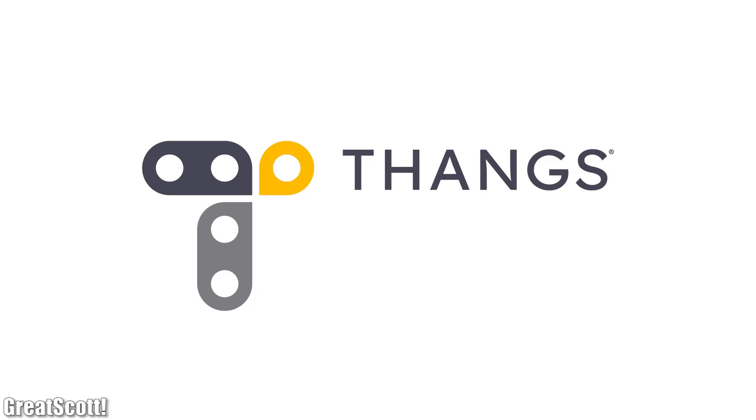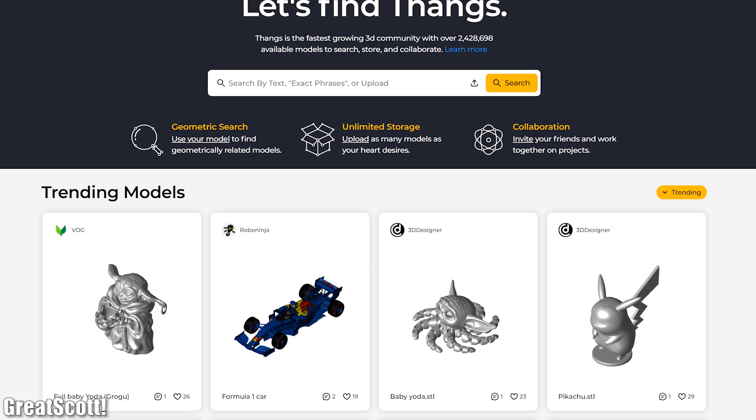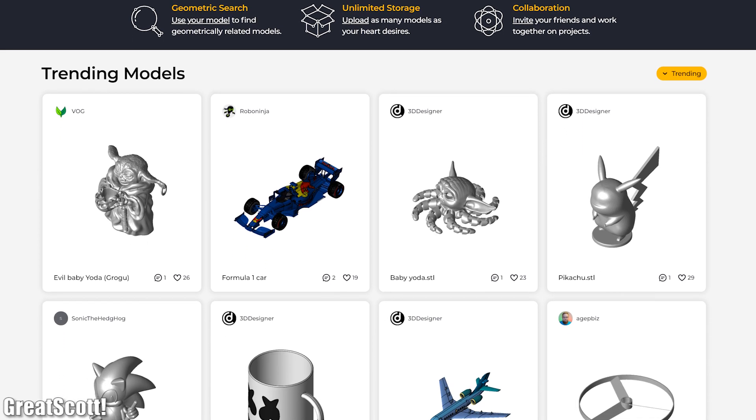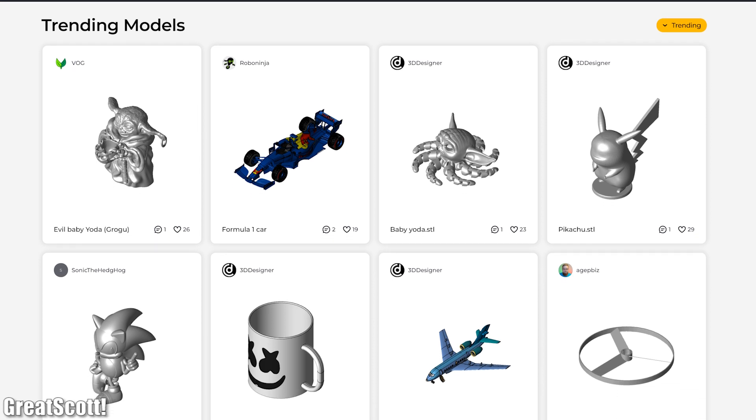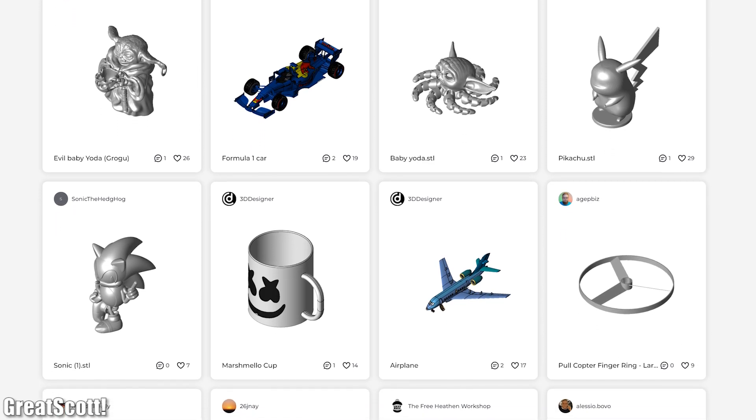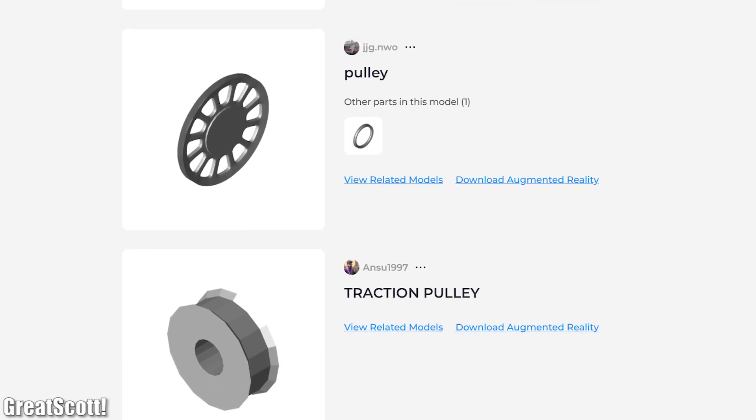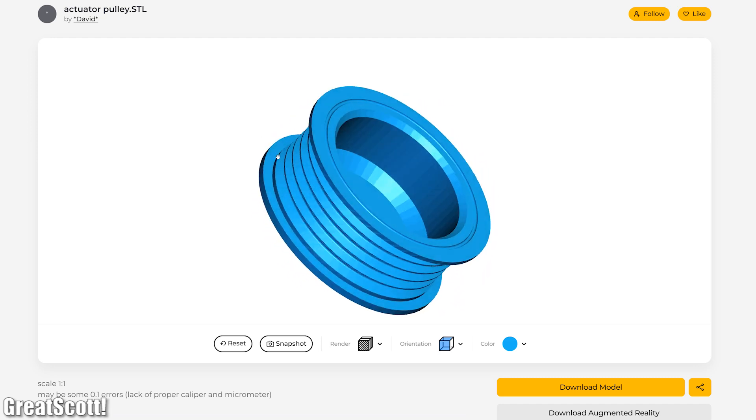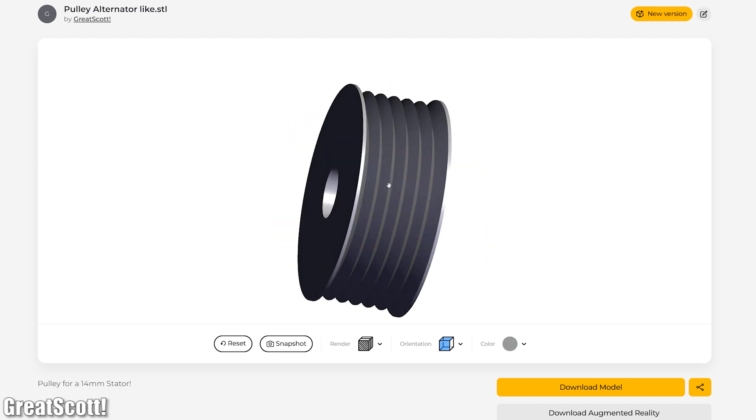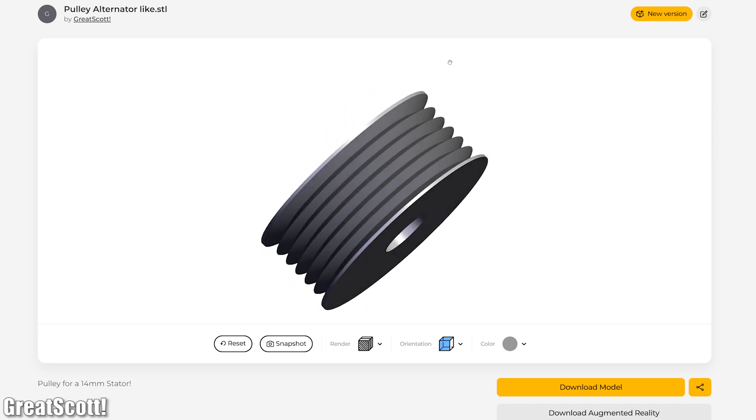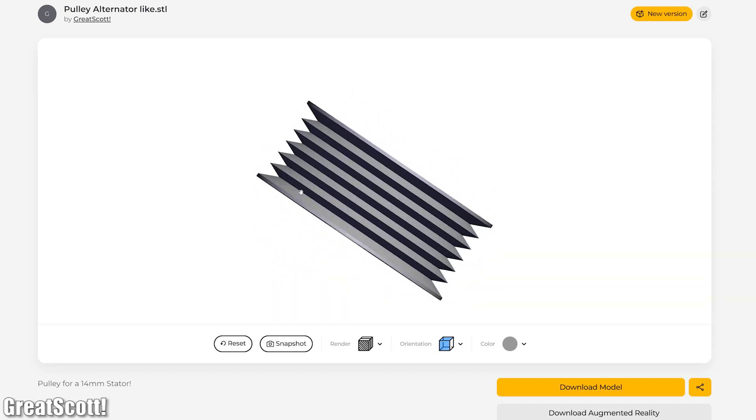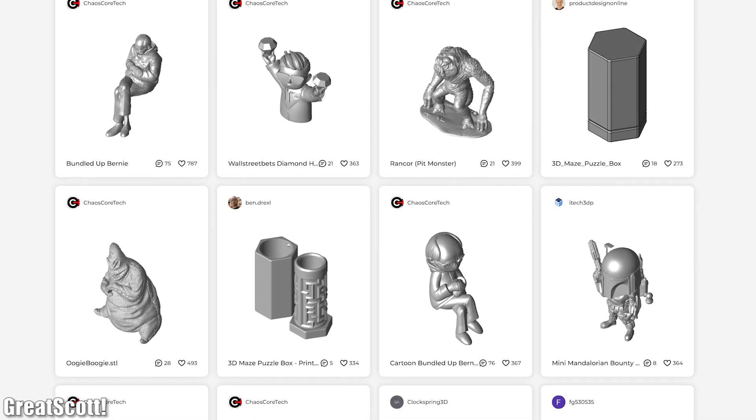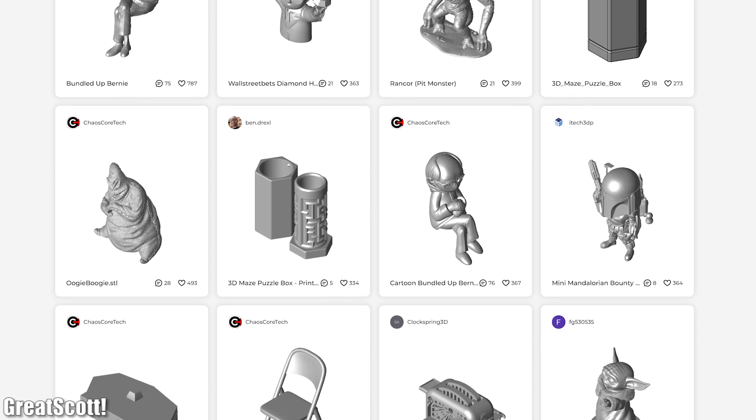This video is sponsored by Thingiverse. Thingiverse is a website for 3D printing enthusiasts, designers, and engineers where you can find over 2.4 million indexed models. I actually looked there for a specific type of pulley for this video and ultimately even found a promising model, but in the end I designed my own pulley for this project which you can actually download through Thingiverse.